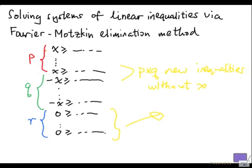If we solve the system of inequalities without x, then we can extend that solution by finding a suitable value for x that satisfies the original system. Conversely, anything that satisfies the original system — if we throw away the x variable — will satisfy this new system without x. That's the key to the Fourier-Motzkin elimination method. To eliminate a variable, rewrite the inequalities so that variable is on the left-hand side, everything else on the right-hand side, with all coefficients of that variable being either 1, minus 1, or 0.